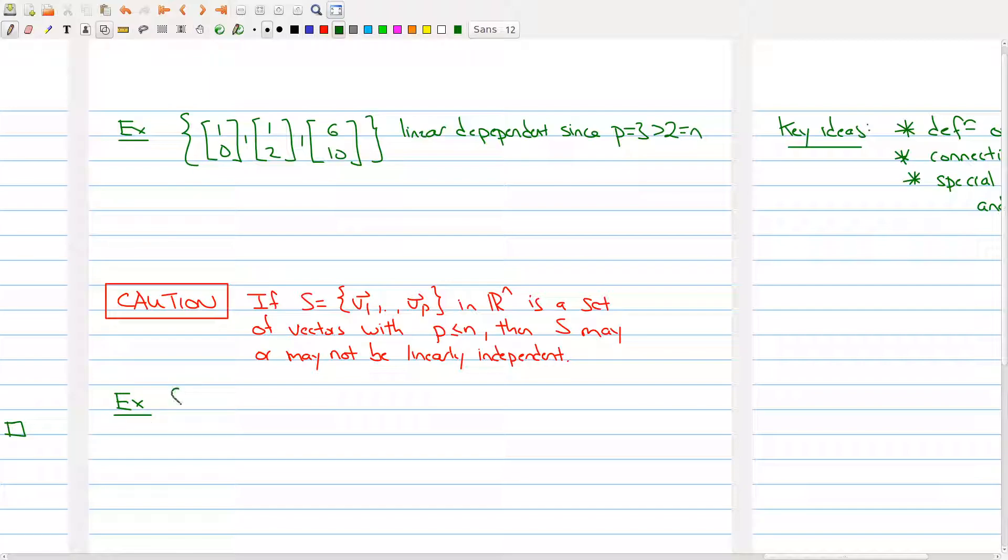So, here I have two vectors inside of R3. So, (1, 1, 1) and the vector (2, 2, 2). So, v2 in R3 is not linearly independent. So, it's linearly dependent. And why is that? Well, since I have the obvious solution, 1 times the first vector minus 1/2 times the second vector gives me (0, 0, 0).